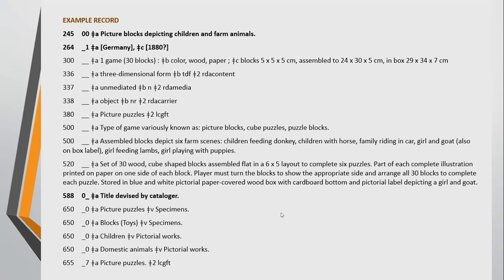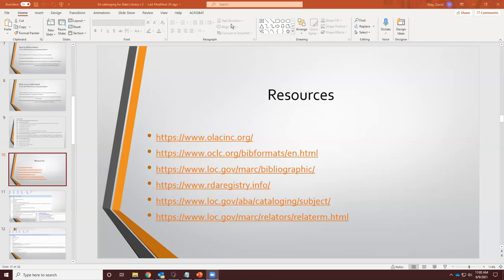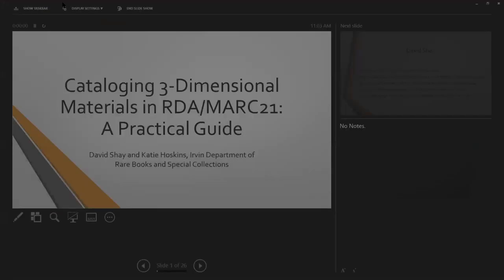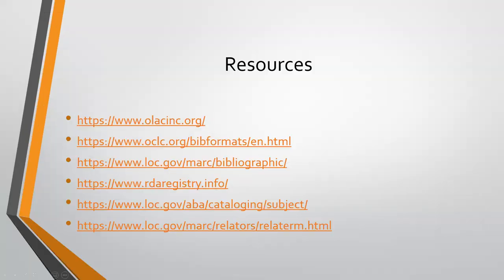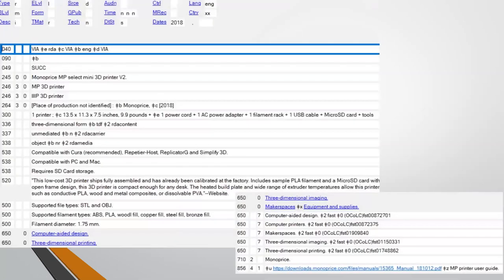The only things I knew were what the collector thought he knew about this item — that it was published in Germany sometime in the 1880s. I included that in brackets to show it's not something that was on the resource itself; it's supplied from outside the resource. I have a question mark after 1880 because that's the approximate year. Now I'm going to turn it over to David, who will guide you through specific MARC fields, combining RDA and the OLAC best practices for objects.